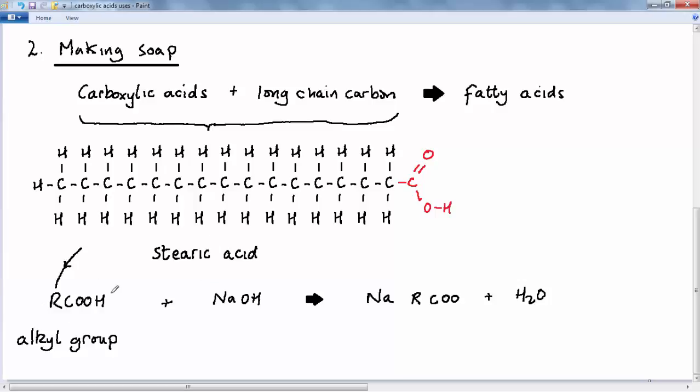So this is our shortened symbol for stearic acid. So what happens in the manufacture of soap is that this stearic acid reacts with sodium hydroxide to produce a salt called sodium stearate. So that's basically the neutralization reaction. You've got an acid plus an alkali or base produces a salt plus water. And this sodium stearate is then used in the manufacture of soap.